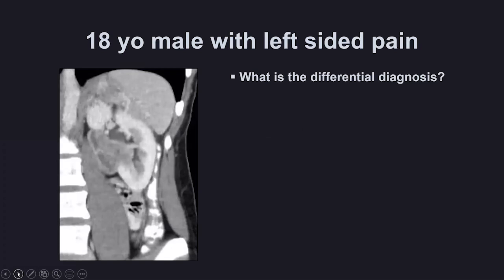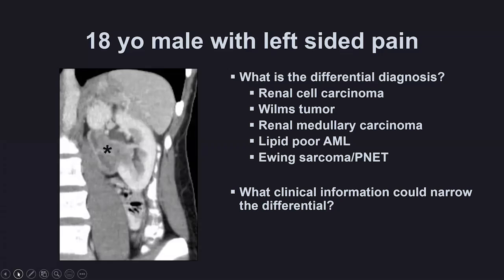Case nine: an 18-year-old male with left-sided pain and a central renal mass. The general differential diagnosis includes RCC, Wilms tumor, renal medullary carcinoma, lipid-poor AML, Ewing sarcoma, or a peanut tumor. The clinical information that really narrows the differential: the presence of sickle cell disease or trait unfortunately narrows this down to renal medullary carcinoma. Renal medullary carcinoma is very strongly related to sickle cell trait, especially in young patients. It has a very poor prognosis, so the sooner treatment can start, the better.